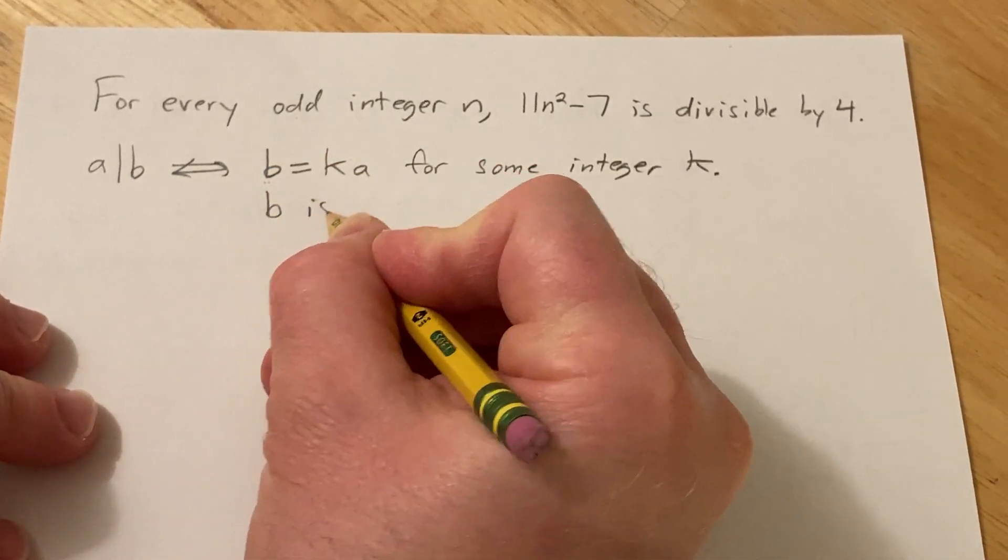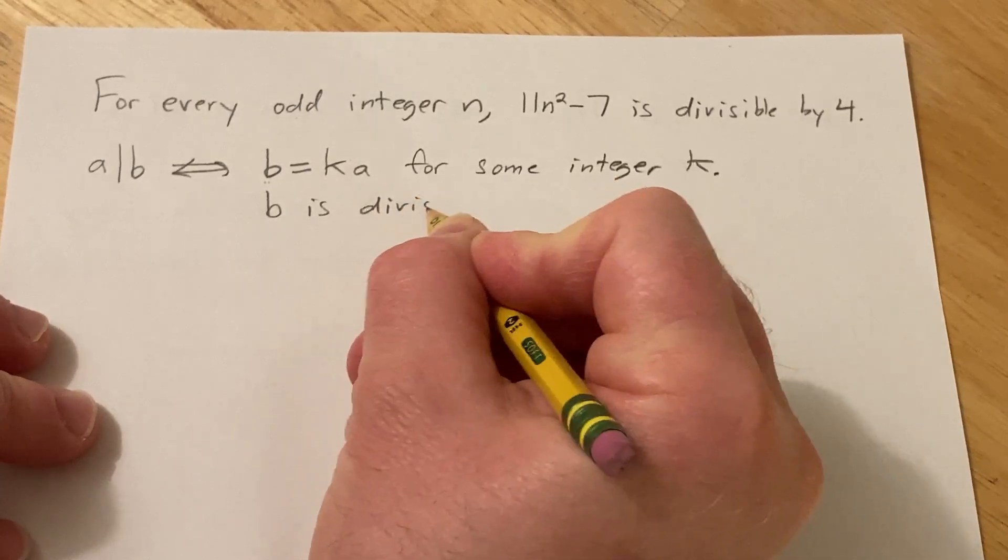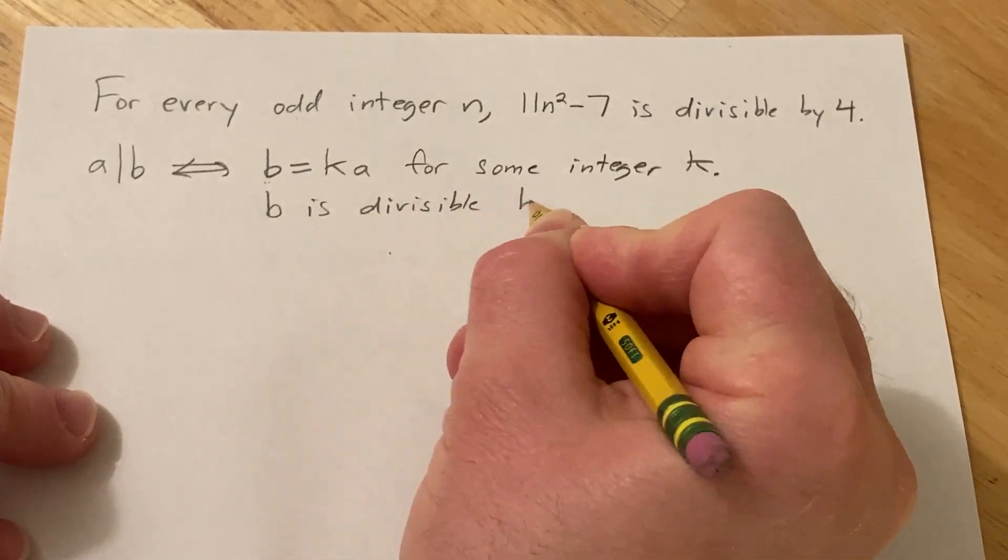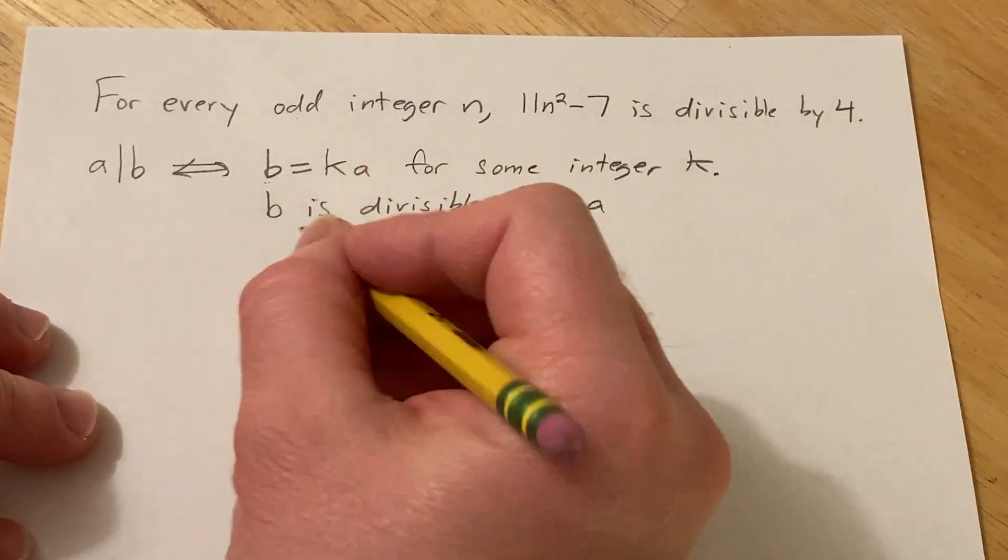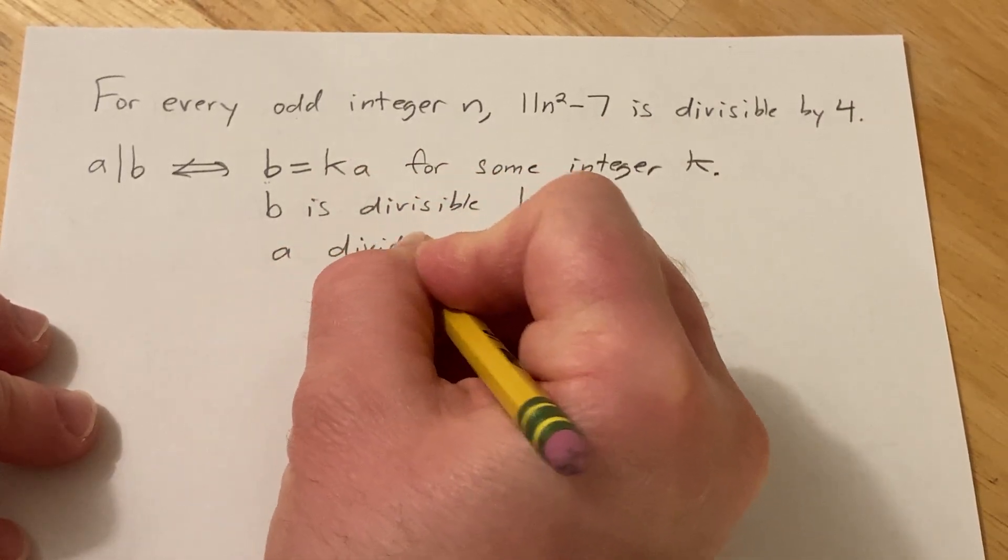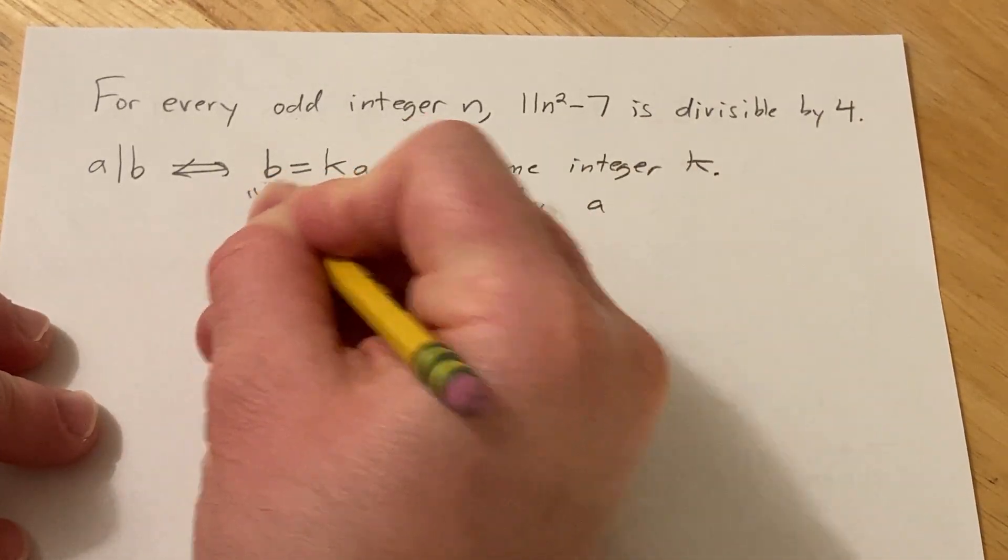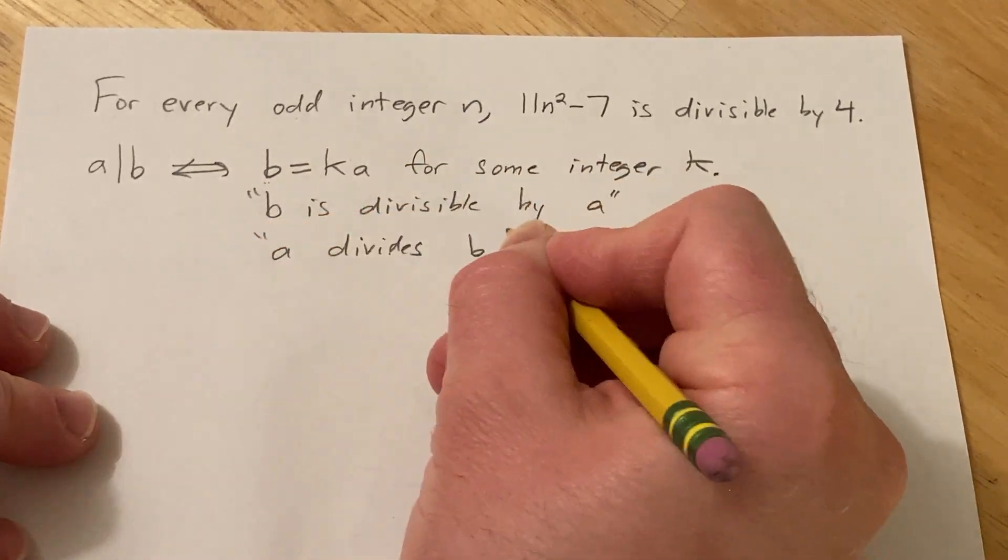So you would say b is divisible by a, or you would say that a divides b. So all of these basically mean the same thing.